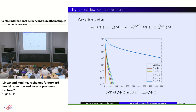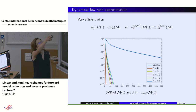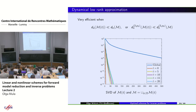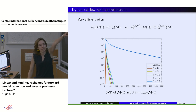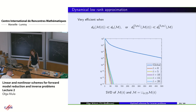To convince you that working with slices M(t) is a great idea: if you take the slices and look at their SVD, the approximation error decays super fast — like a dream. But if you take the whole time interval, you get a much slower decay. So working with M(t) is very convincing.